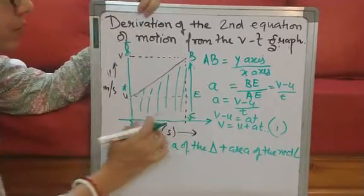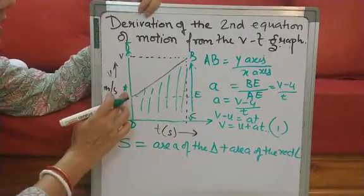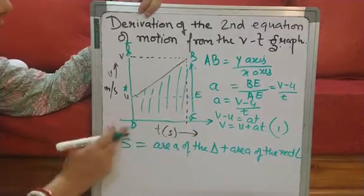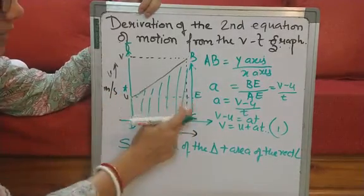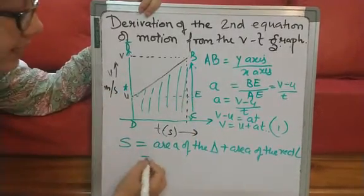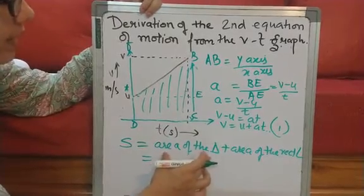Let us say displacement S is equal to area of the triangle plus area of the rectangle. You can name them according to the triangle. Like for triangle, it is abe. And for here, it is aecd.